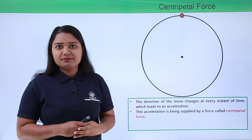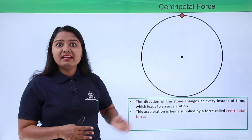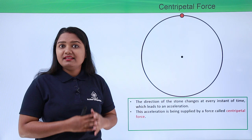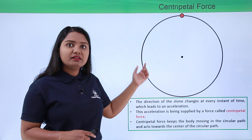When the string is released or breaks, this centripetal force is lost, and that is why the stone no longer moves in circular motion but starts moving in a straight linear path and flies off. So the centripetal force is what keeps the body moving in a circular path — that is our conclusion from this discussion.